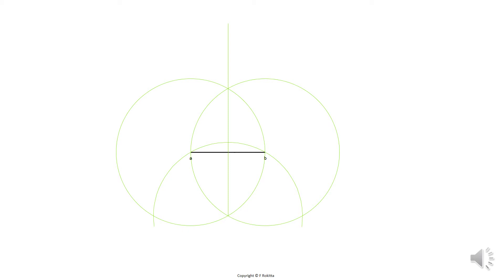Now it is very important to notice the three intersections as indicated here: the one at the bottom left, the one in the middle where the vertical line intersects with the arc, and the intersection at the bottom right.